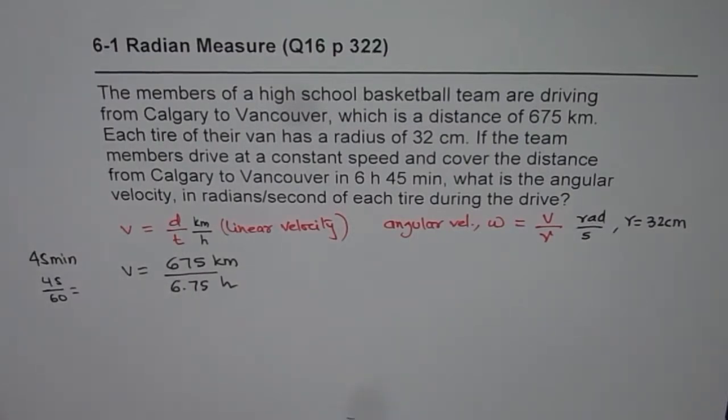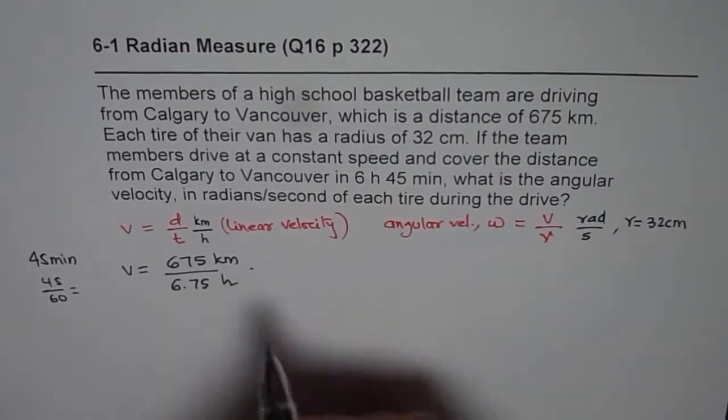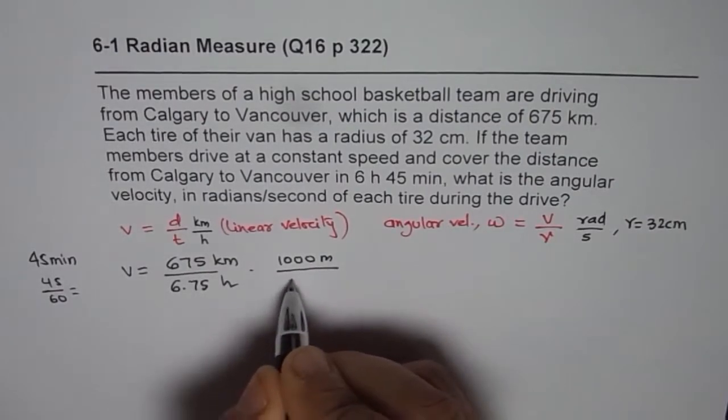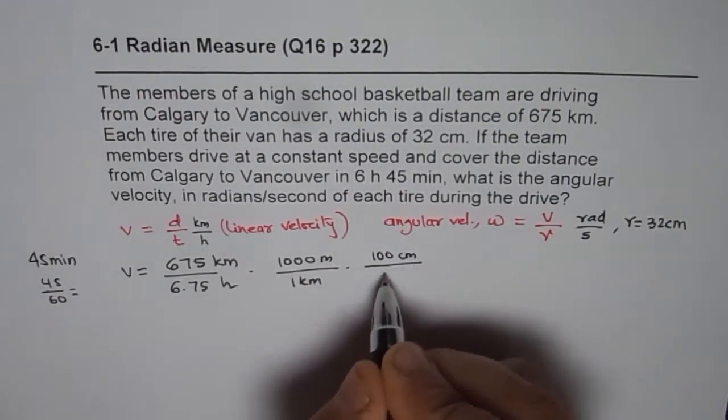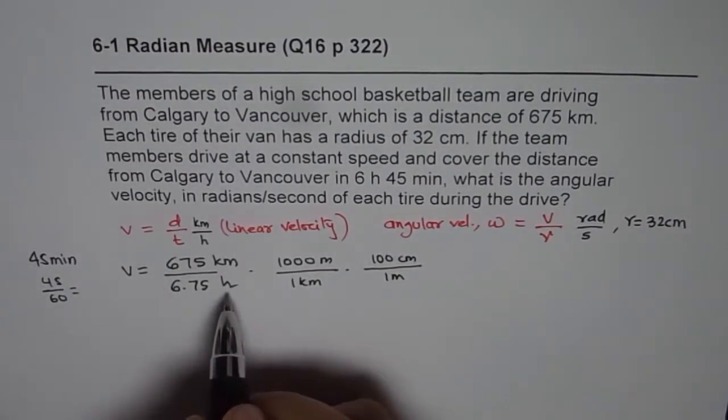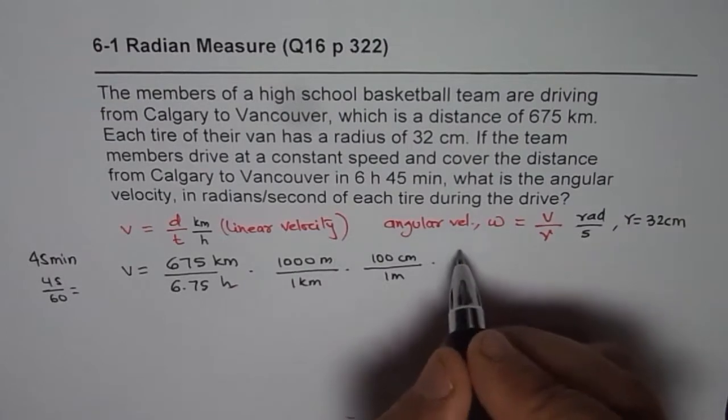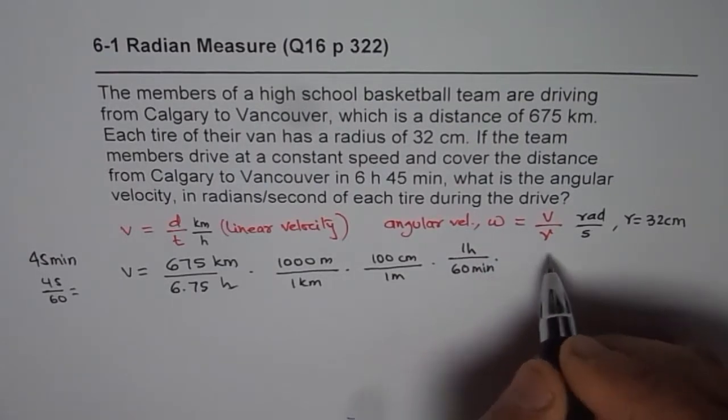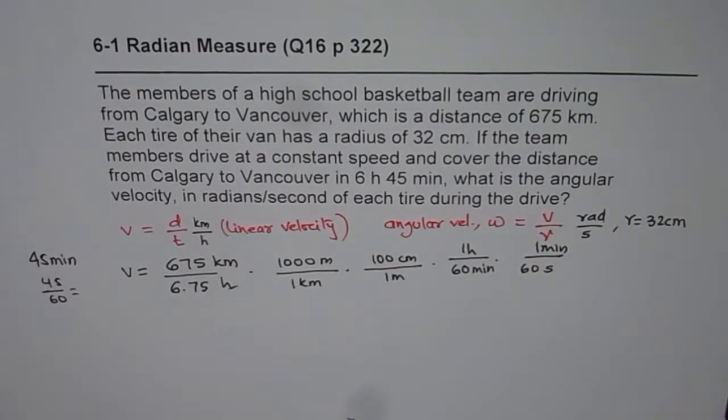Since we know we have to convert to centimeters and seconds, let us do this conversion right away. 1000 meters is 1 kilometer, and 100 centimeters is 1 meter. So that is how we convert from kilometers to centimeters. Now let us convert hours to minutes. We have 6.75 hours. We write hours on top and say this is 60 minutes. Now we need to cancel minutes, so we say 1 minute equals 60 seconds.